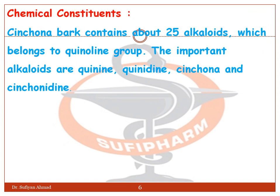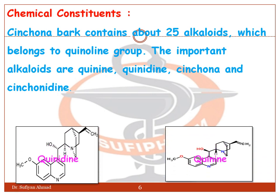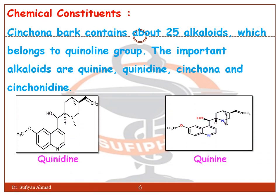The cinchona bark contains about 25 alkaloids which belong to the quinoline group. The important alkaloids are quinine and quinidine, cinchonine and cinchonidine. These are the structures of quinidine and quinine.